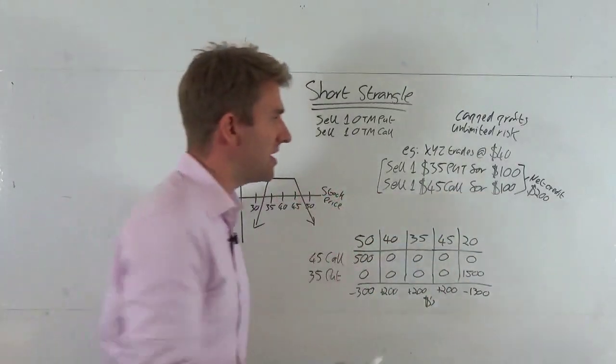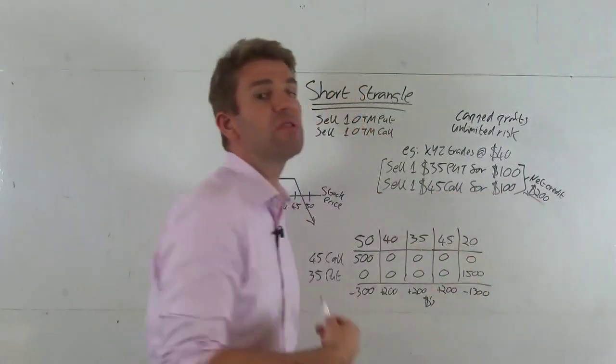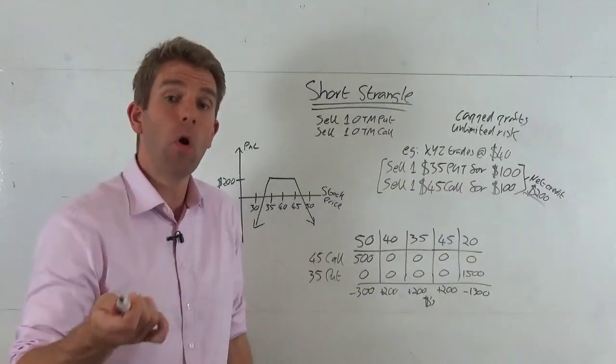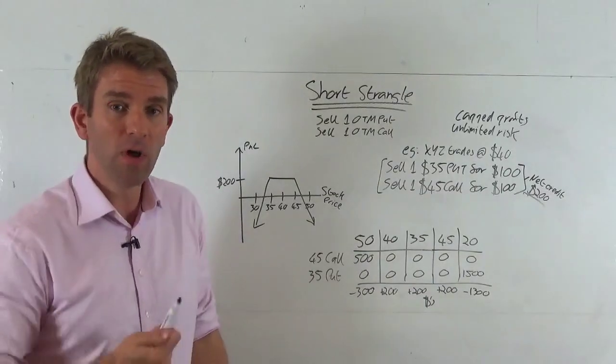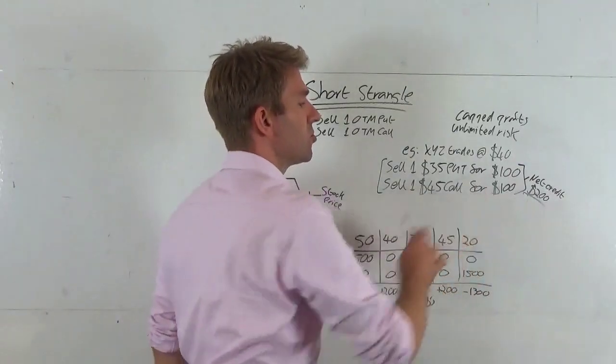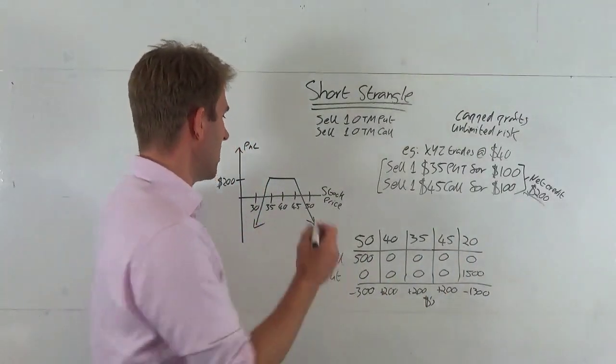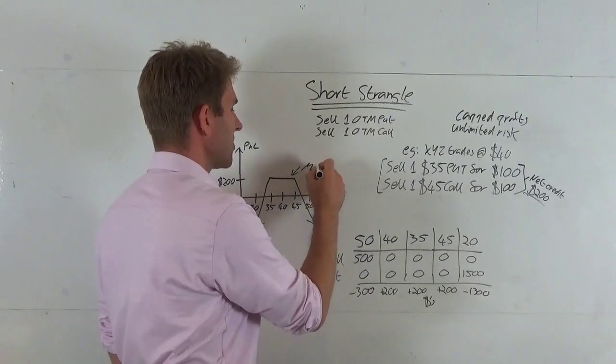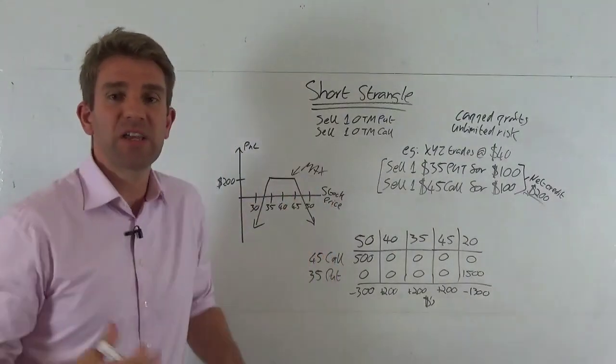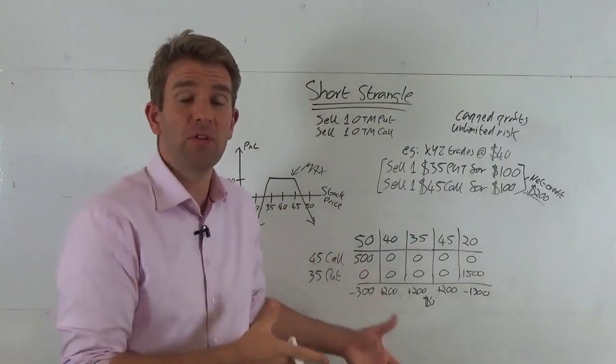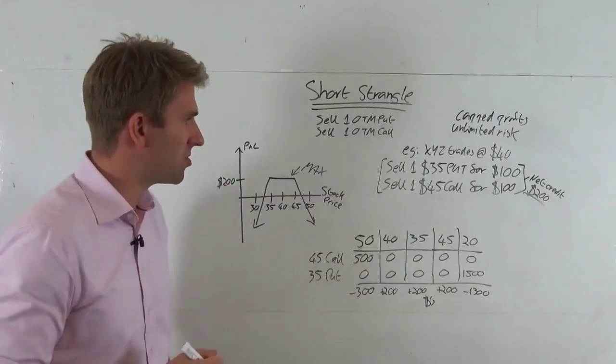So the net credit we receive is $200. That's what we receive for these contracts. You can see why we hope these expire worthless. If they do, we receive the $200 full profit for the deal and that is the maximum profit we can make. We can't make any more than that because they can only expire worthless and we're currently short both those options.